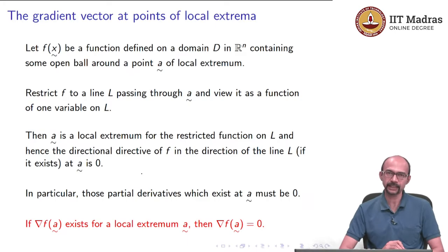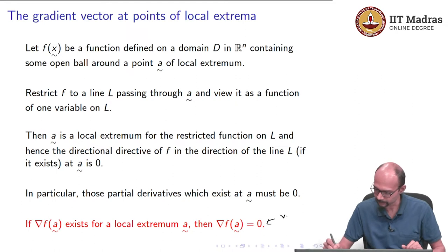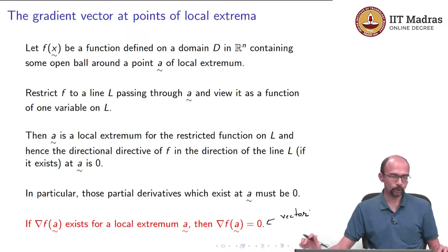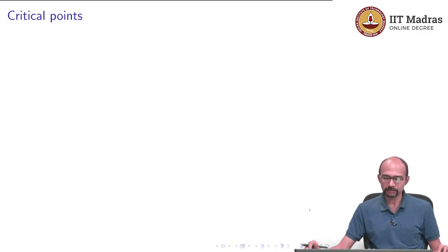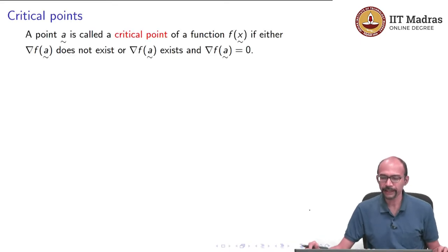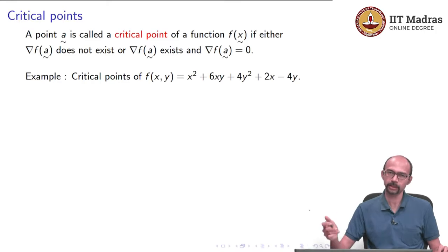If the gradient exists at a point of local extremum, then the gradient must equal the zero vector. This gives us a way to find local extrema: set the gradient to 0 and look at all the points obtained. Out of them, some may be local extrema. This is exactly the strategy we followed for the one-variable case. Such points are called critical points: a point A is a critical point of f if either the gradient does not exist, or the gradient exists and equals 0.